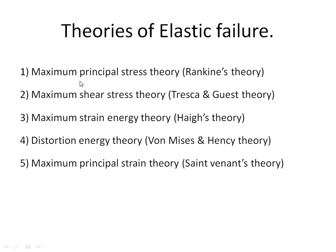In this tutorial, I am going to explain five theories of failure. The first is the maximum principal stress theory, also known as Rankine's theory. The second is the maximum shear stress theory, also known as Treska's or Guest's theory. The third is the maximum strain energy theory, also known as Haigh's theory. The fourth is the maximum distortion energy theory, also known as von Mises or Henke's theory. The fifth is the maximum principal strain theory. For diploma students, the first, second, and fourth theories are most important.